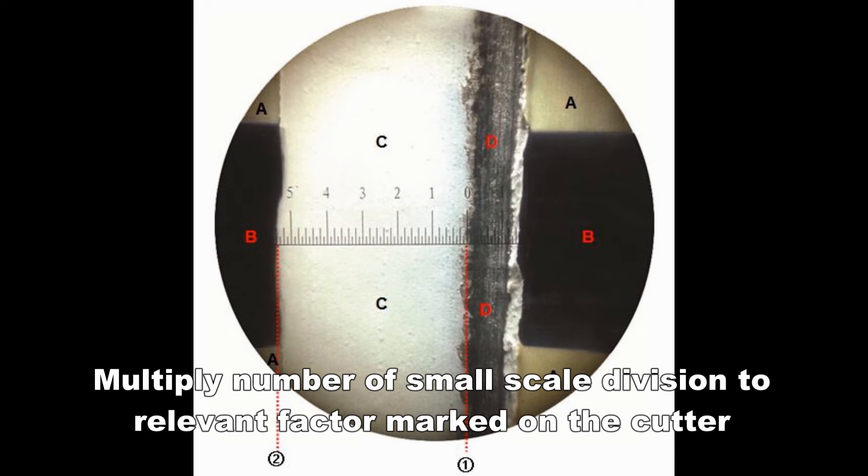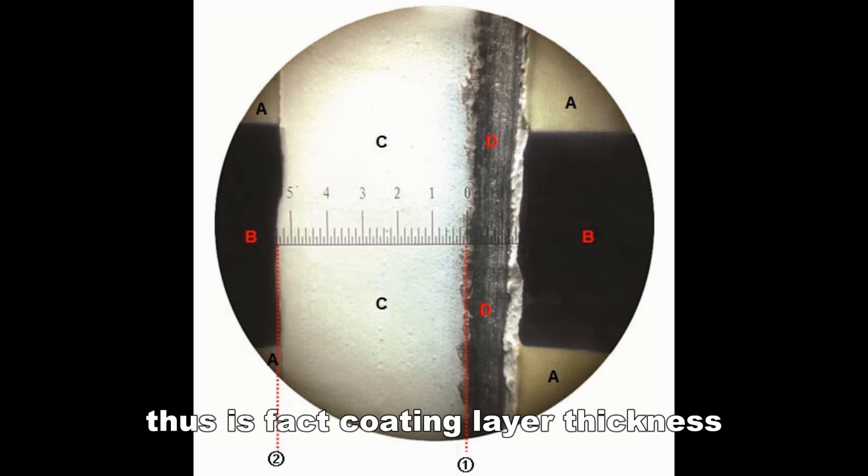Multiply the number of small scale divisions by the relevant factor marked on the cutter. This gives the actual coating layer thickness.